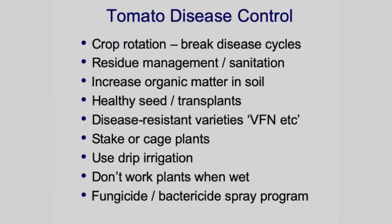Now I'm going to talk about disease control. Crop rotation is good — you want to keep your tomatoes and peppers moved around with grasses, onions, and alliums. Tomatoes following beans is not a good idea because of root knot. Rotation helps but it's not a cure-all.